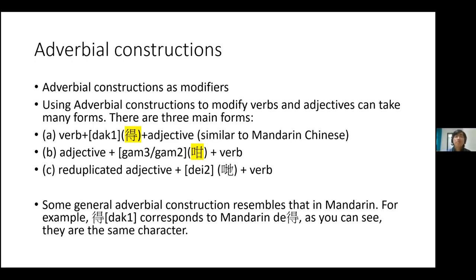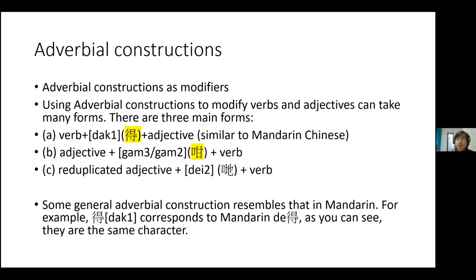Now we move to adverbial constructions. There are three major forms of using adverbial constructions as a modifier. The first is: verb + 'dak1' (the marker) + adjective. The second is: adjective + an adverbial construction + verb. The third is: reduplicated adjective + an adverbial construction + verb.